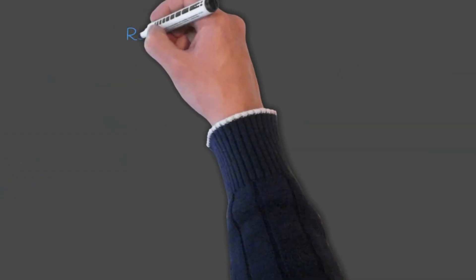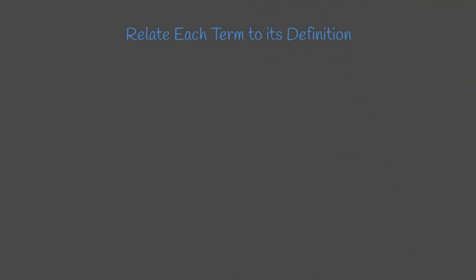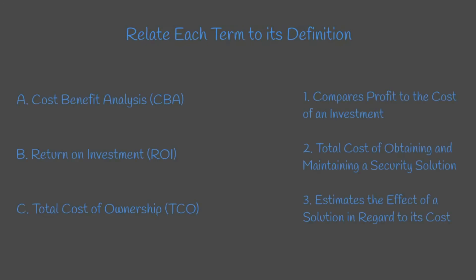Question 2: Relate each term to its definition. A. Cost-benefit analysis. B. Return on investment. C. Total cost of ownership. A cost-benefit analysis estimates the effect of a solution in regards to its cost. Return on investment compares profit to the cost of an investment. Total cost of ownership is the total cost of obtaining and maintaining a security solution.